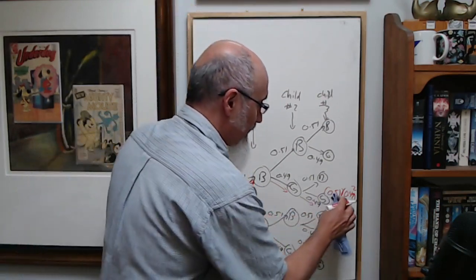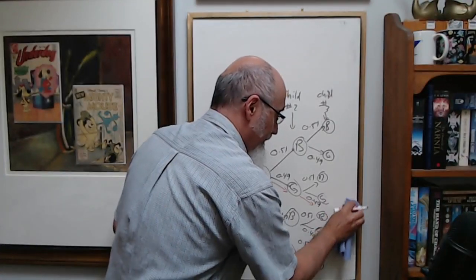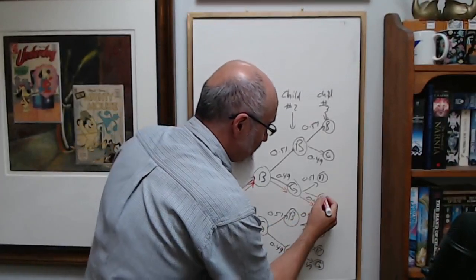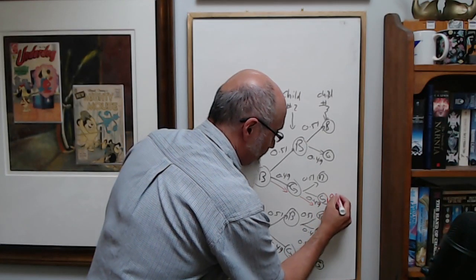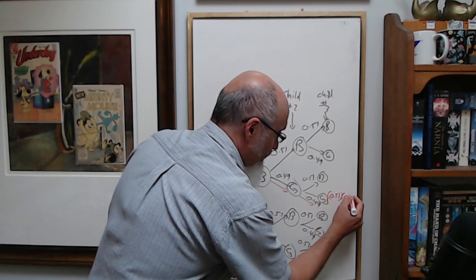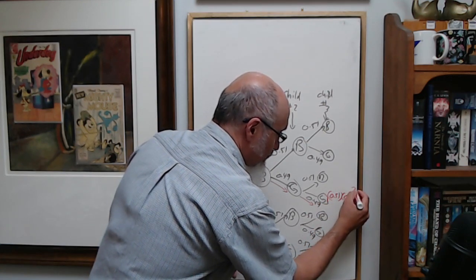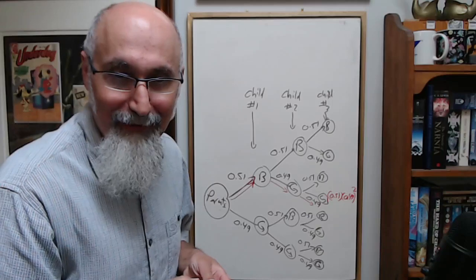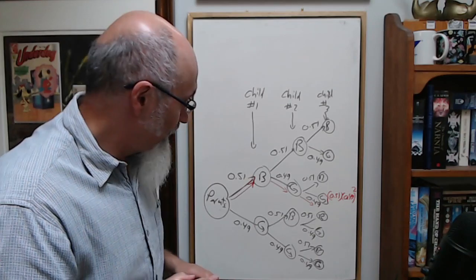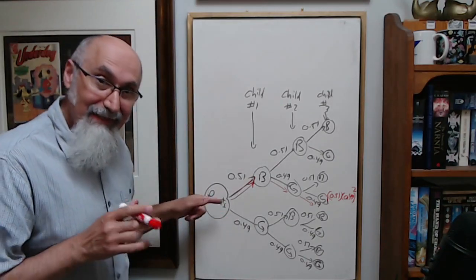So this one, the outcome is 0.51 times 0.49 squared. Now your next avenue you can go: your first kid can be a girl, right?